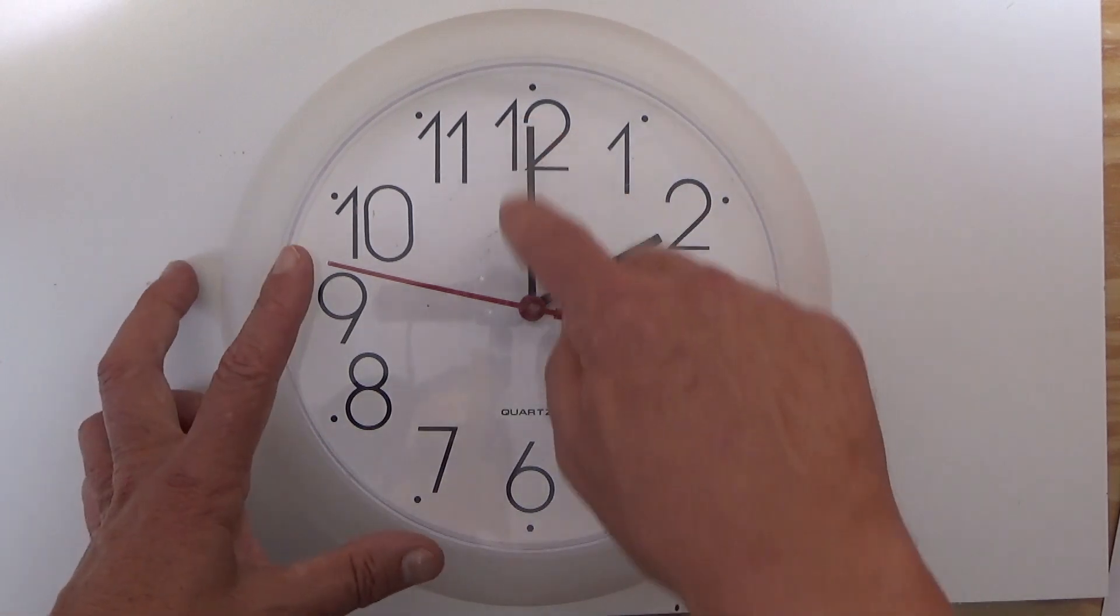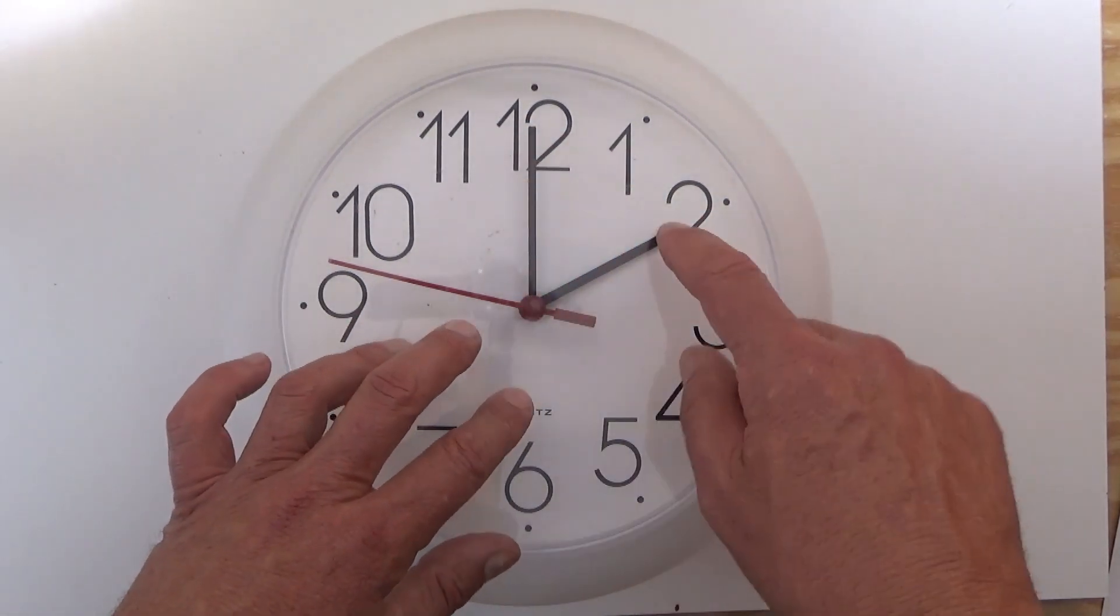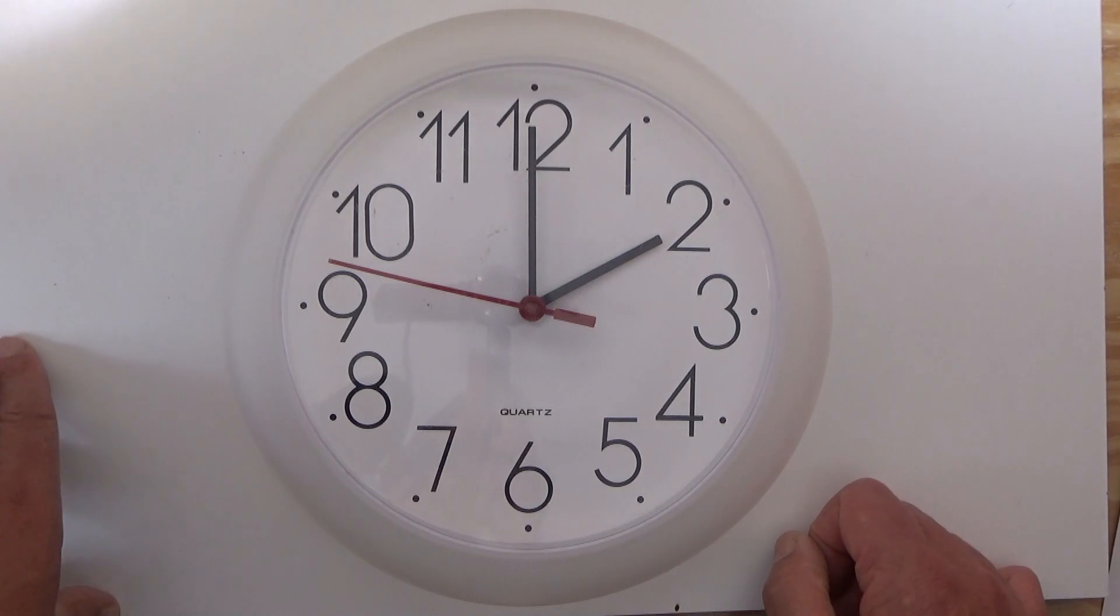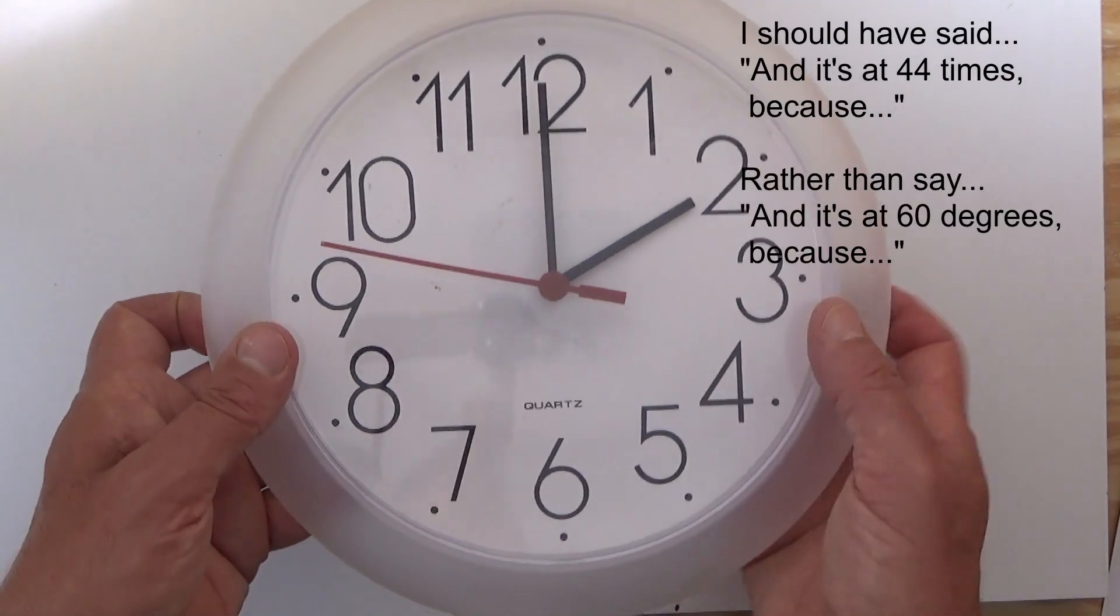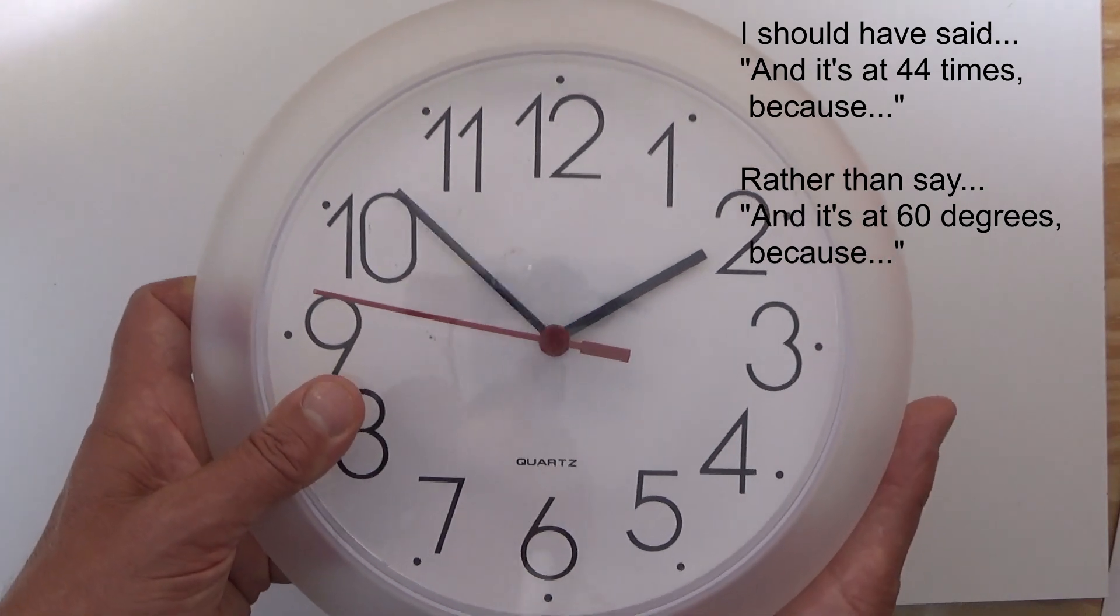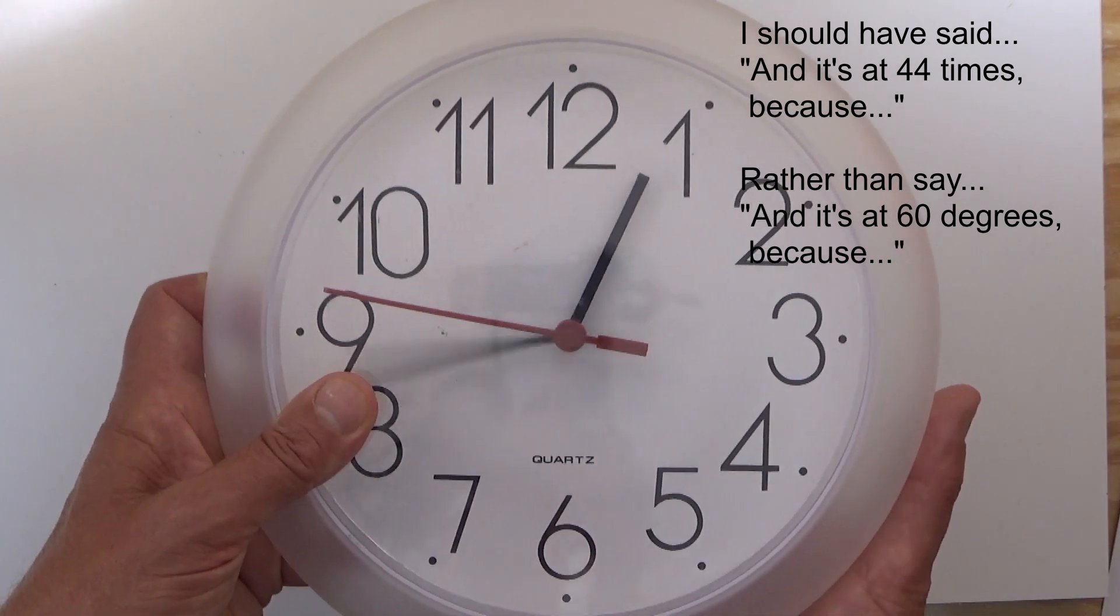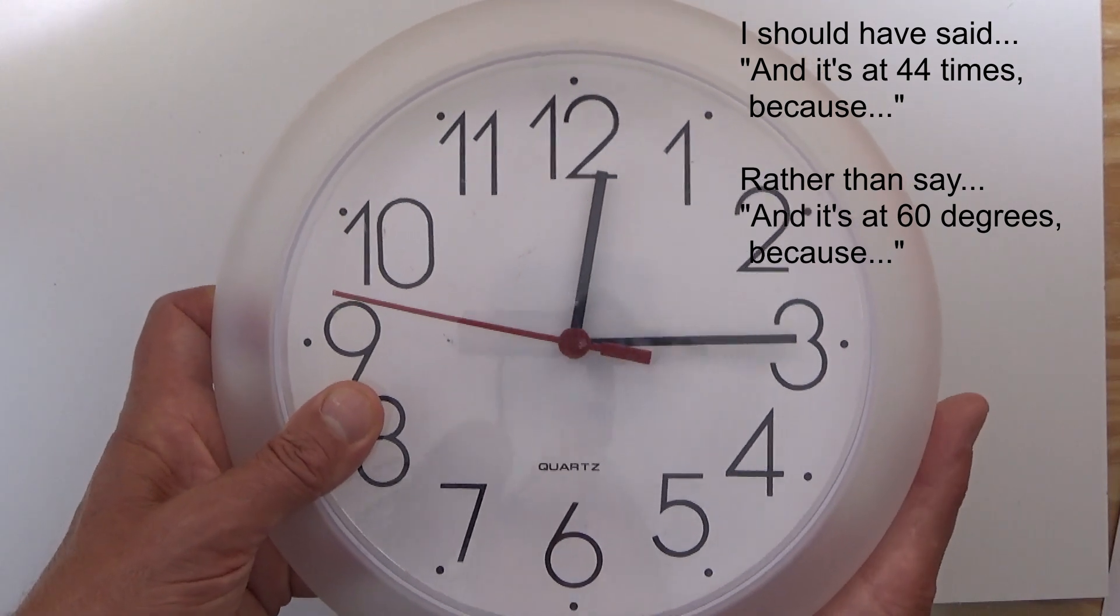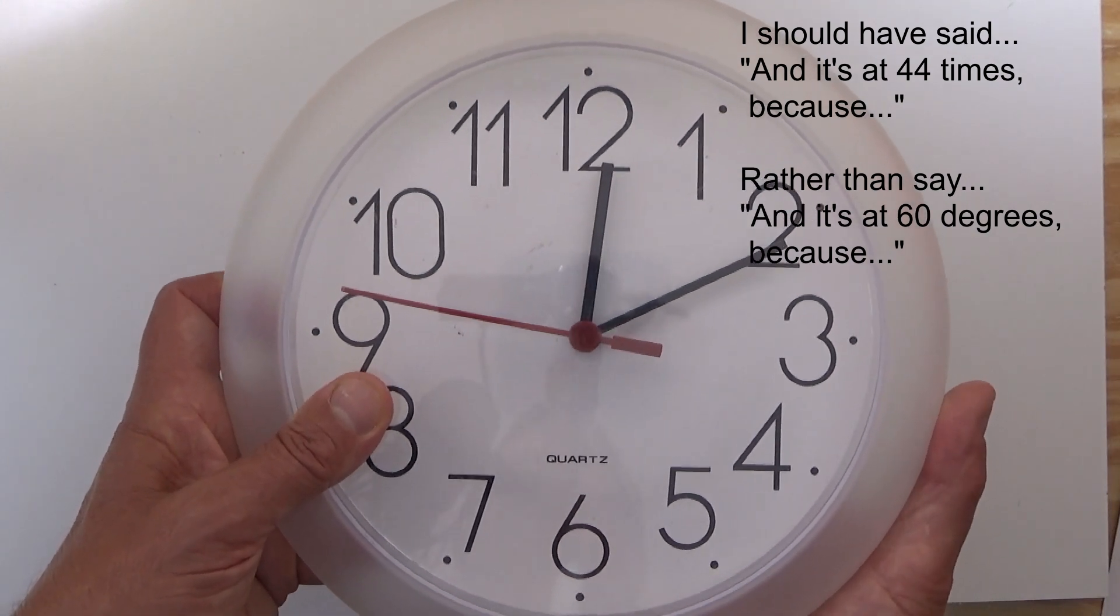The actual answer is 44 times. Yes, 44 times that the hands on a clock are at a 60-degree angle in a 24-hour day. It's at 60 degrees because the hands are lining up not twice every 60 minutes, but actually twice every 65 or 66 minutes.